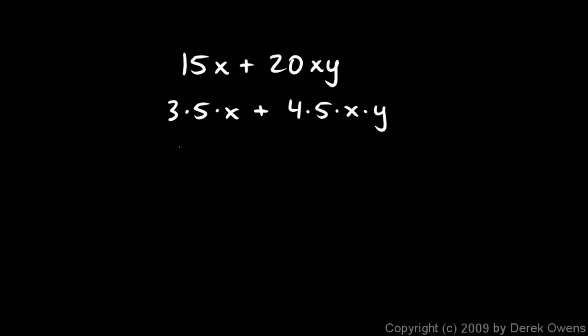Well, each term has a 5, and each term has an x. So I can factor out the 5x. So I'll write 5x times, and then let's look at the two terms and see what's left. Well there's the 3 there, 5x times 3, and then I have my plus sign. And if I take the 5x away from this term, I'm left with the 4 and the y multiplied together. So this factor is 5x times 3 plus 4y.